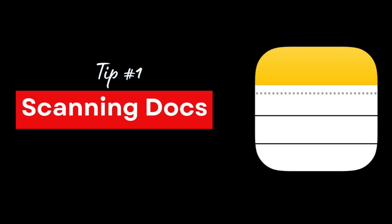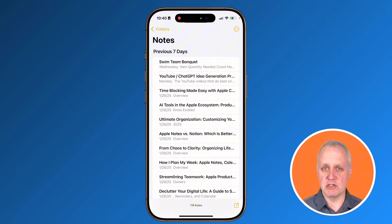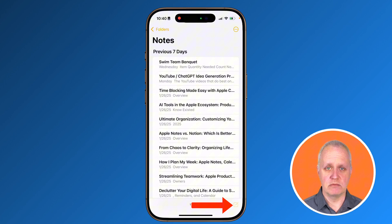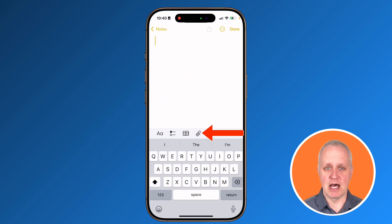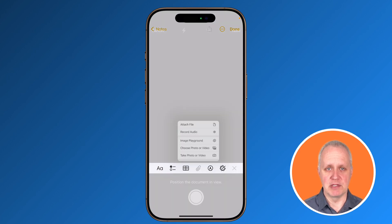Declutter your home, business, and life while keeping every important paper at your fingertips. Scanning documents and notes lets you search, store, and organize them digitally. Here's how to scan documents. Open a new note, tap the paperclip icon above the keyboard, then select scan documents.